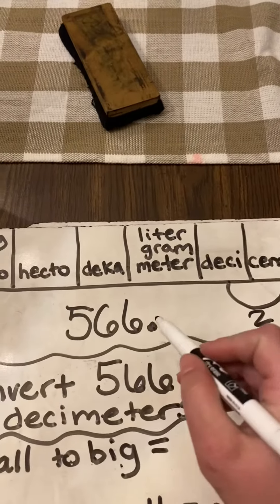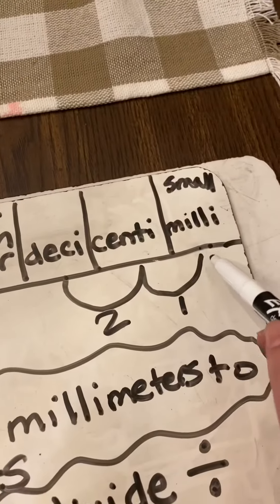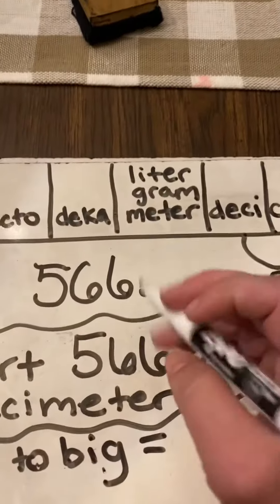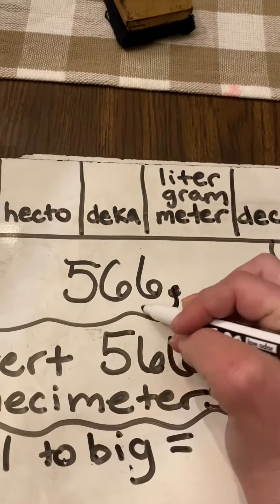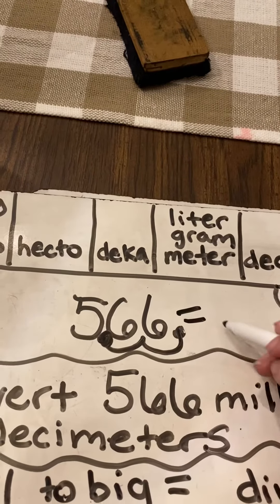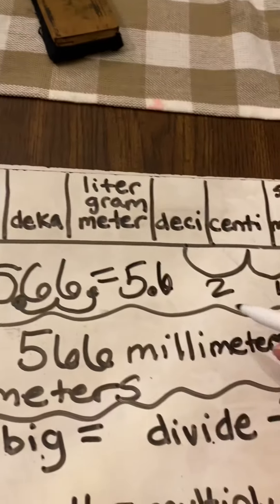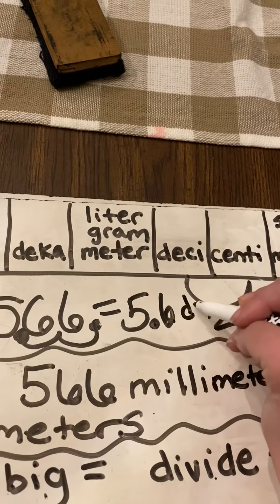So, that means we need to move the decimal 1, 2 times this way. 1, 2. Our answer is 5.66 decimeters.